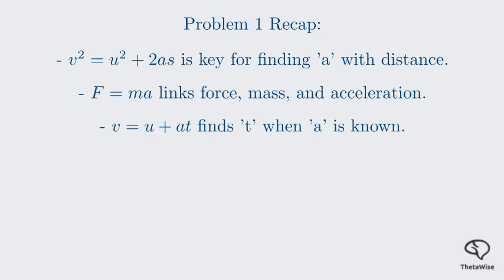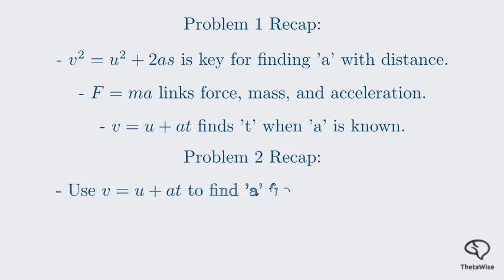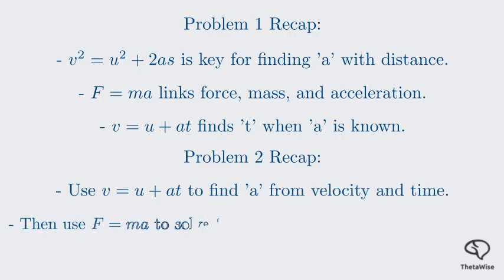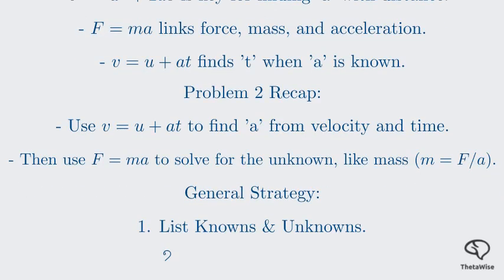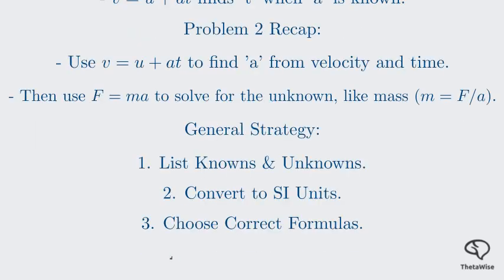Then we moved to our second problem, where we had to calculate the mass of a truck given its velocity, time to stop, and the braking force. This problem highlighted the importance of first finding the acceleration using V equals U plus at, because the acceleration was a necessary component for our target formula, F equals MA, which allowed us to solve for the mass. In both cases, we saw the crucial first step is to read the problem carefully, list the knowns, and identify our unknown. The next, equally important step, is to convert all units into the standard SI system to avoid errors. Finally, we must choose the correct formulas from our toolkit of equations of motion and Newton's laws to solve for the unknown values.